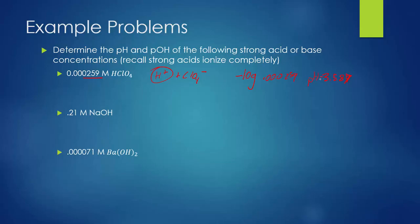So the pH equals 3.587. The pOH is 14 minus 3.587, giving pOH equals 10.413. This makes sense because this is an acid: pH less than 7 confirms it is acidic, and the pOH is correspondingly high.